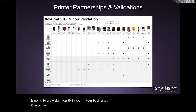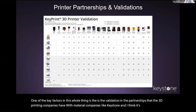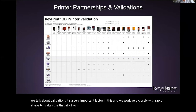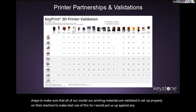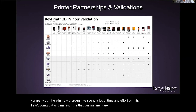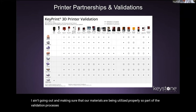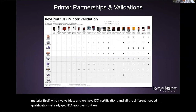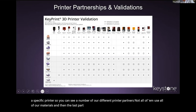One of the key factors is the validation and partnerships that 3D printing companies have with material companies like Keystone. We work very closely with RapidShape to make sure all of our printing materials are validated and set up properly on their machine. Part of the validation process involves FDA regulations — there are really three parts: the material itself, those materials being printed on a specific printer, and the post-curing.